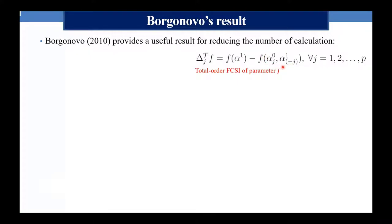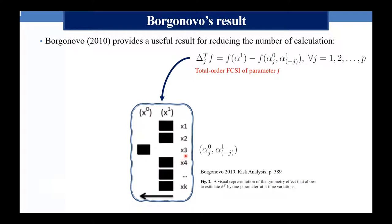Basta fare una semplice differenza: il valore che la funzione obiettivo assume nel caso 1 meno il valore che la funzione assume quando tutti i parametri sono al caso 1 ad eccezione del parametro j, che rimane al caso base. Questo basta per trovare l'FCSI di ordine totale. I contributi totali diventano così p calcoli anziché 2^p: la complessità computazionale diventa lineare anziché esponenziale.